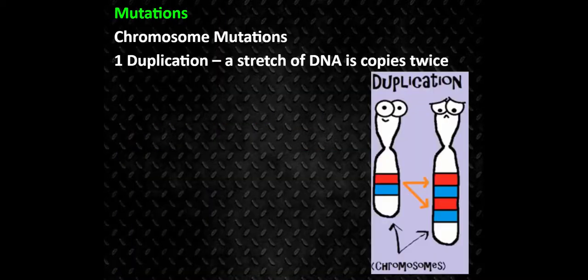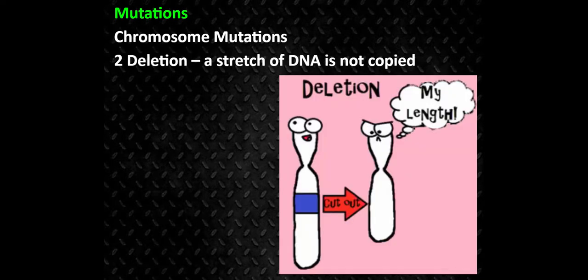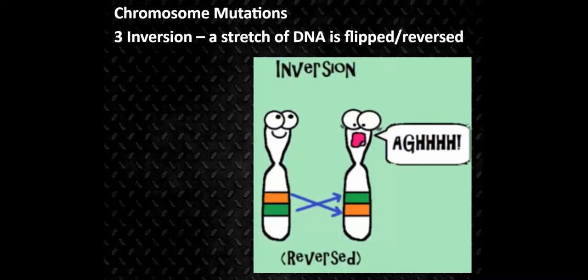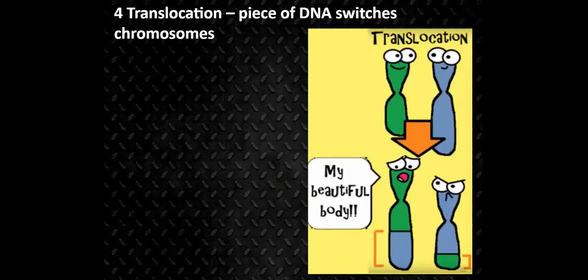Duplication is where a stretch of DNA is copied twice. A deletion mutation is where a stretch of the chromosome is not copied. An inversion mutation is where a section of chromosome is flipped over or reversed. A translocation is where you have two chromosomes and the pieces somehow switch — that would be the mixing of two different kinds of chromosomes.